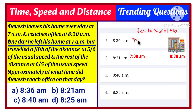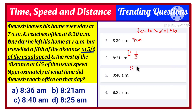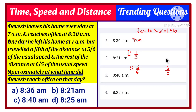One day he left his home at the usual time, 7 AM, but traveled one-fifth of the distance at a speed of 5/6 of his usual speed. We don't know the original distance or the usual speed, but he travels one-fifth of the original distance at 5/6 of the usual speed, and the rest of the distance at 6/5 of the usual speed. Approximately, at what time did Devis reach the office on that day?